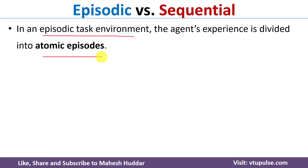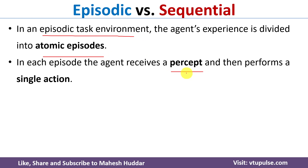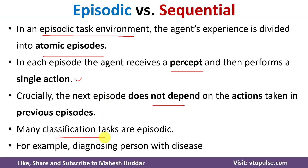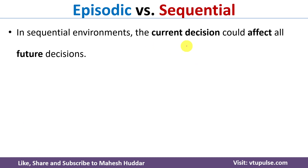The next property is episodic versus sequential. In an episodic task environment, the agent's experience is divided into atomic episodes. The agent receives a percept in one episode and performs a single action, and that percept and action do not depend on previous episodes. For example, in a classification task diagnosing whether a person has a disease, whenever a new person comes the agent decides based only on the current person's percept, not on the previous person's percept. Such environments are known as episodic environments.